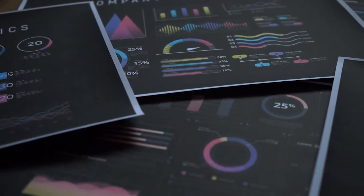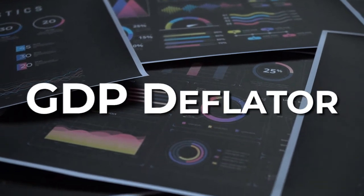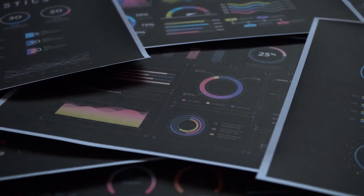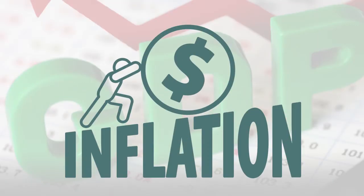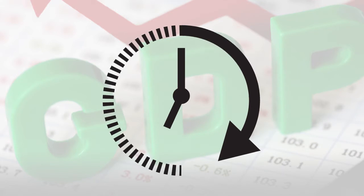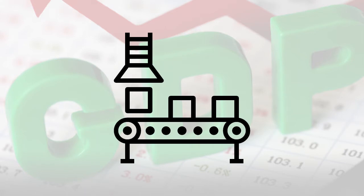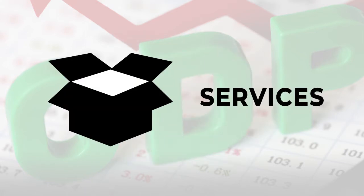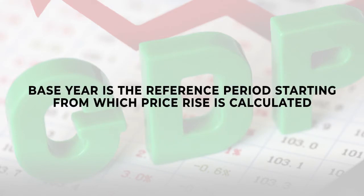Welcome to Kalkine's educational series. The topic for today is GDP deflator. The GDP deflator is a measure of inflation defined over a specific period. It is the ratio of the value of goods and services produced in an economy in the current period to the value of these goods and services produced in the base year. The base year is the reference period starting from which price rise is calculated.